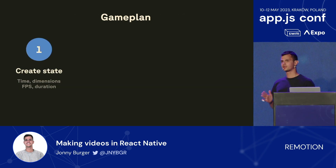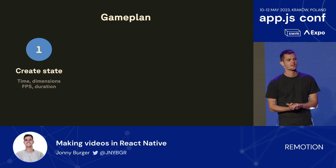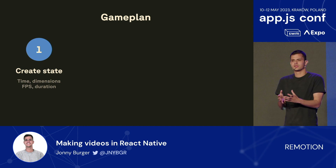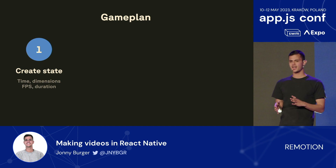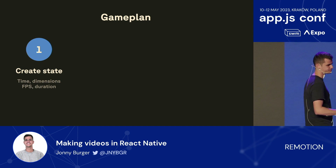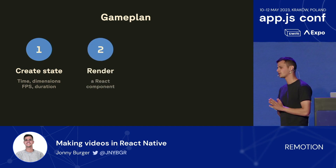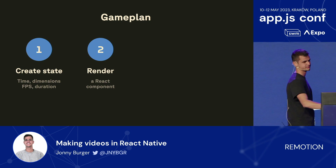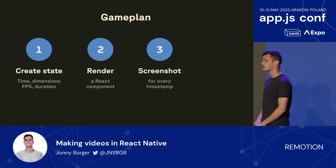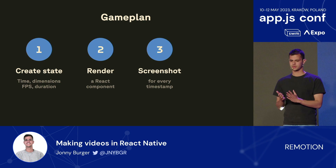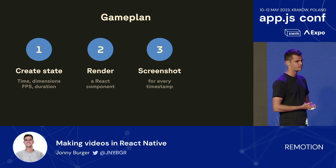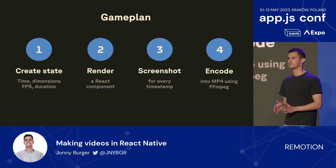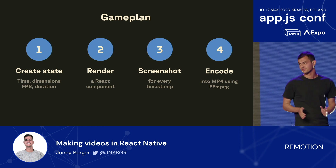Let me introduce you to our game plan. In the first step, we're going to create some basic state — a scaffold — so we know the current time, the width of the video, the duration, etc. Then we are going to mount a regular React component that will be our canvas. The third step will be to screenshot each frame using the React Native ViewShot library. Step four, we encode it into an MP4 video using FFmpeg. And step five, we win.